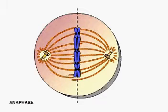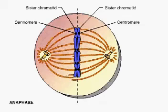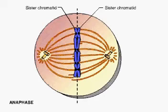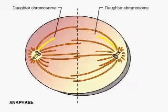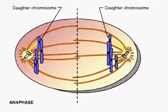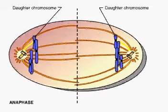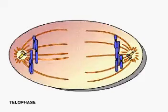Anaphase begins when the two centromeres of each chromosome come apart, separating the sister chromatids. Once separate, each sister chromatid is considered a full-fledged daughter chromosome. Motor proteins of the kinetochores walk the daughter chromosomes along the spindle microtubules toward opposite poles, and the microtubules shorten. At the same time, the spindle microtubules not attached to chromosomes lengthen, pushing the two poles farther apart and elongating the cell.